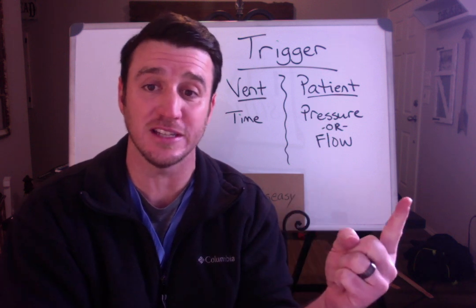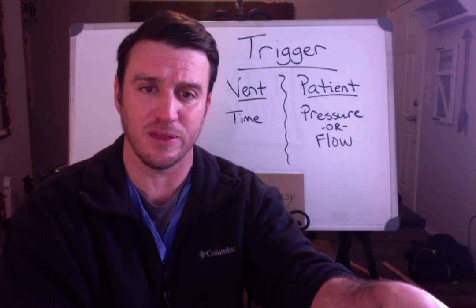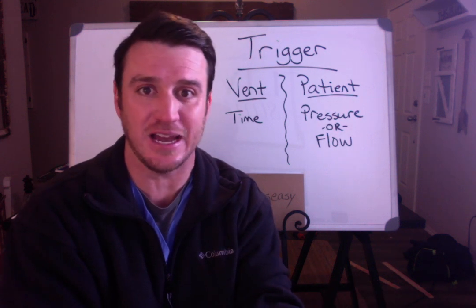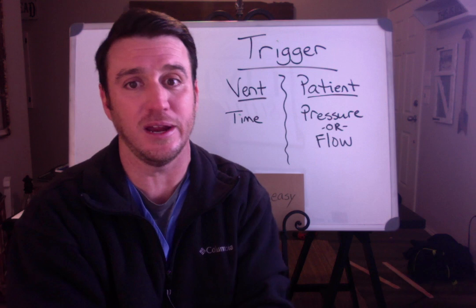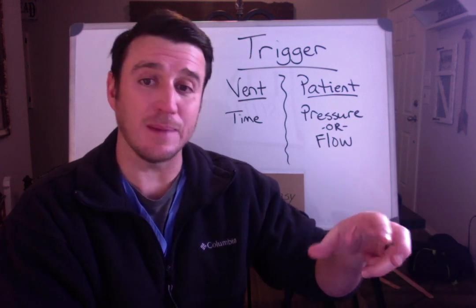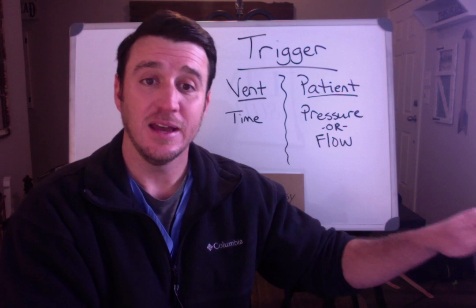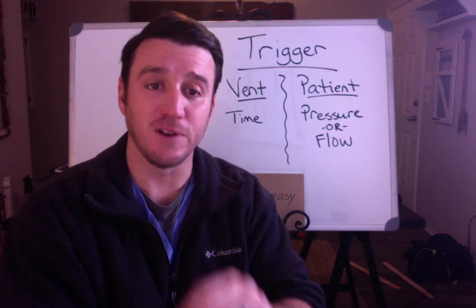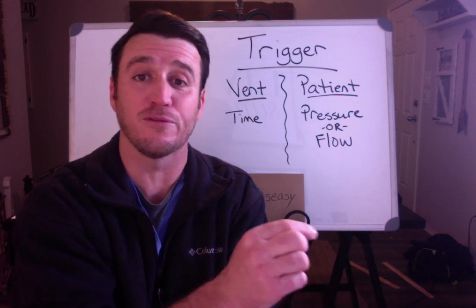If the patient is allowed to trigger an assisted breath, a spontaneous breath, or a pressure support breath — which is still a spontaneous breath — and the patient is allowed to breathe over the set rate, which is what we see 99% of the time, then on the patient side of things, the patient's trigger is always pressure or flow. You set that as the respiratory therapist — you will decide if you want this patient in pressure triggering or flow triggering.